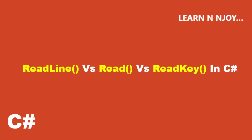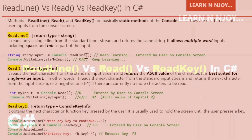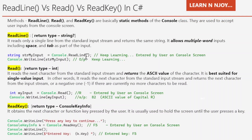Without any further delay, let's get started. What are the ReadLine, Read, and ReadKey methods? These methods are basically the static methods of the Console class. They are used to accept user inputs from the console screen. Let's learn about them one by one.